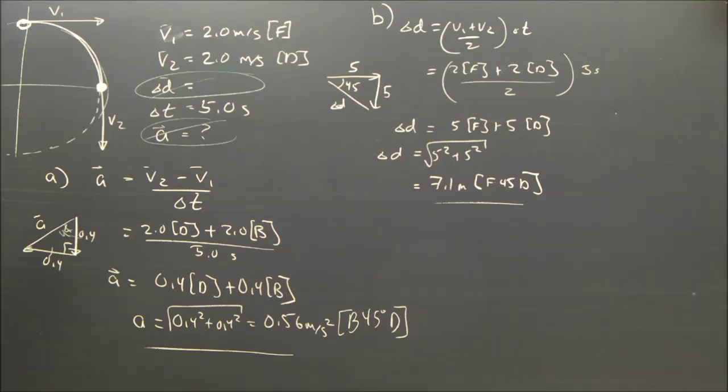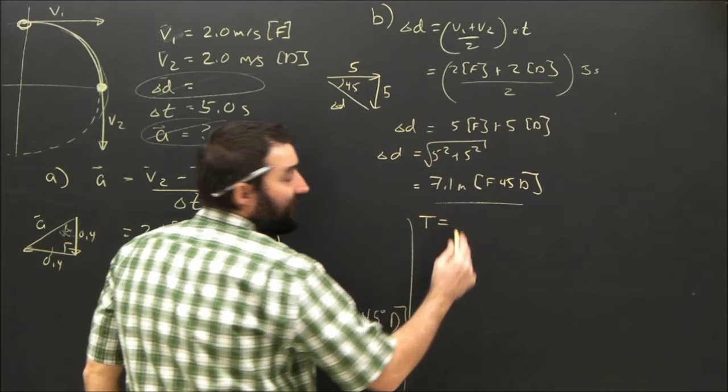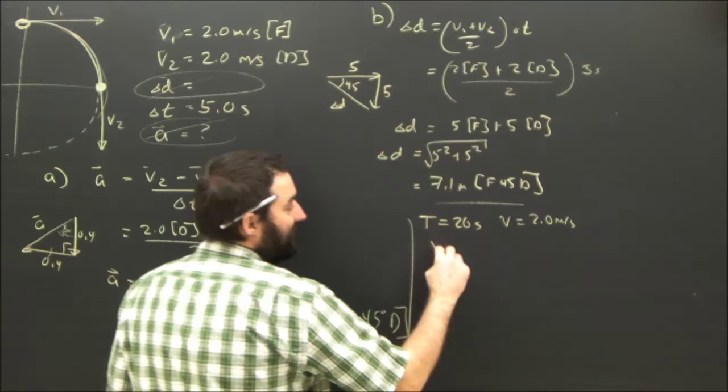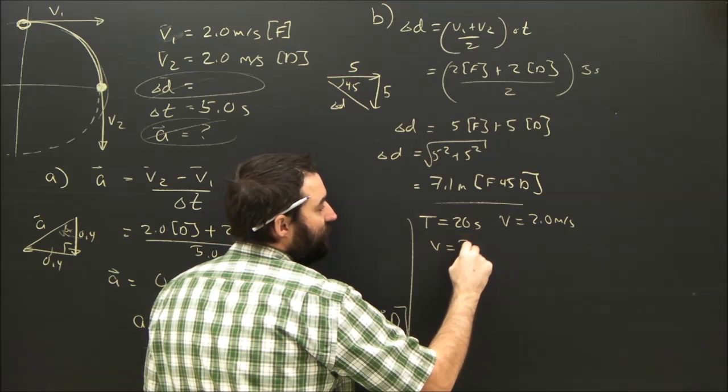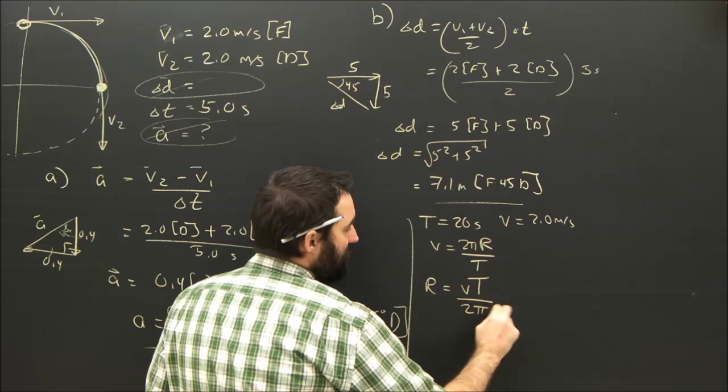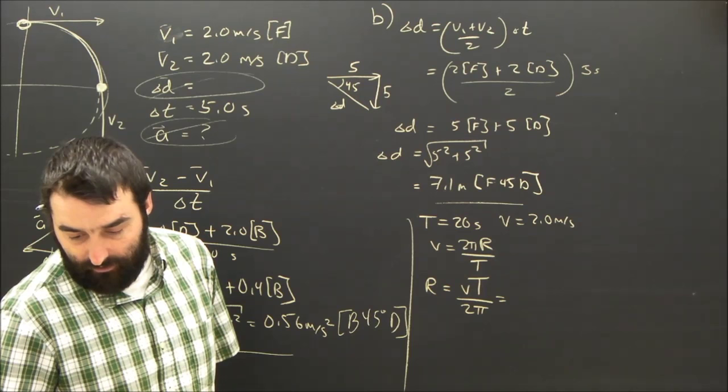We were told it took 5 seconds to go a quarter, so I think you can understand that the period, the time it takes for one full rotation, is going to be 20 seconds. And you know the speed is 2 meters per second. So we can find the radius, can't we? Because the velocity is the distance over time, so the speed is the distance over time. The distance is a circle, which is just 2πr. And the time is the period, which is 20 seconds.